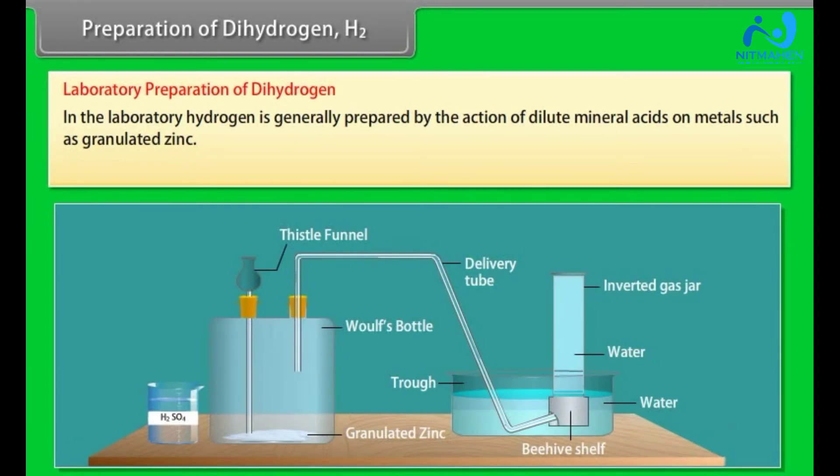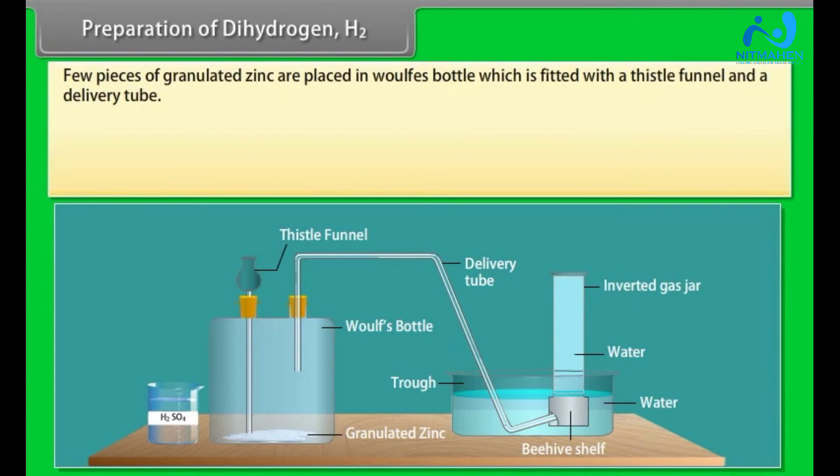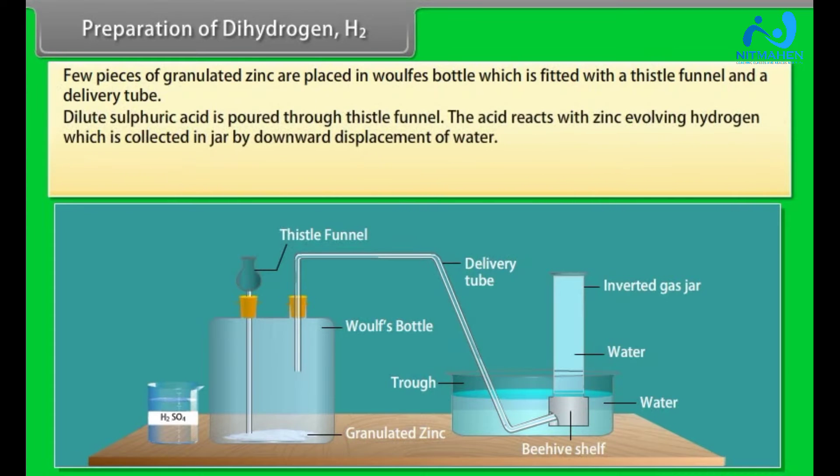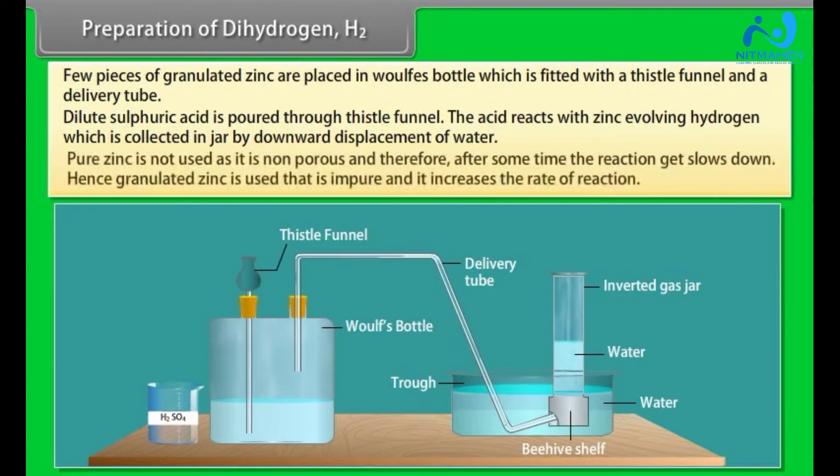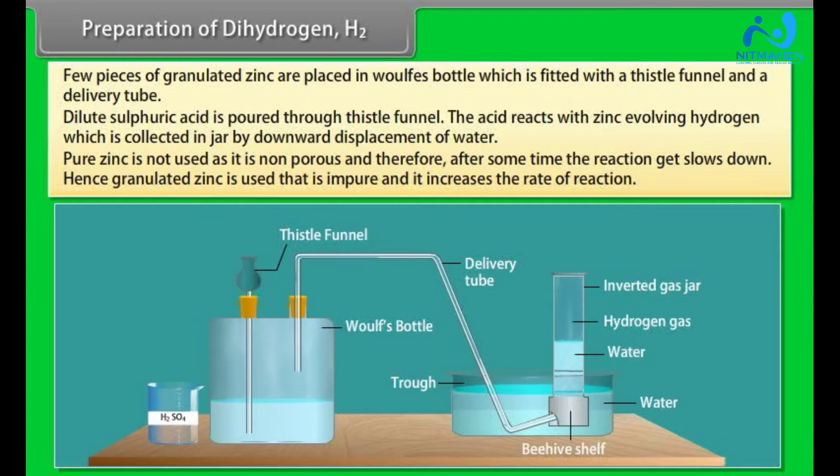In the laboratory hydrogen is generally prepared by the action of dilute mineral acids on metals such as granulated zinc. Few pieces of granulated zinc are placed in ball's bottle which is fitted with a thistle funnel and a delivery tube. Dilute sulphuric acid is poured through thistle funnel. The acid reacts with zinc, evolving hydrogen which is collected in jar by downward displacement of water. Pure zinc is not used as it is non-porous and therefore, after some time, the reaction slows down. Hence, granulated zinc is used that is impure and it increases the rate of reaction.